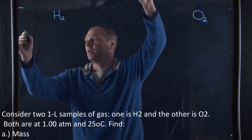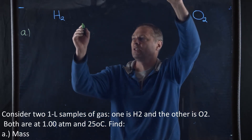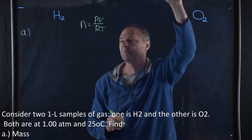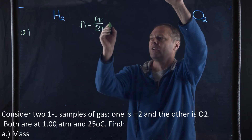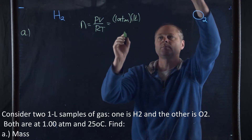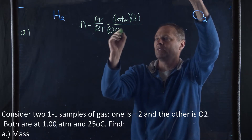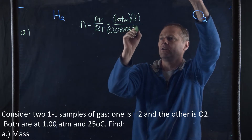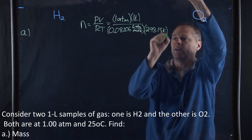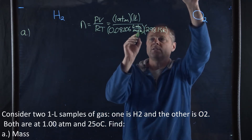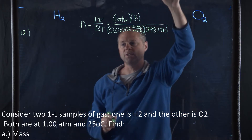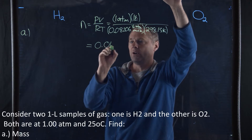To start out with, we're going to look at the mass. In order to find the mass, we're going to use the equation n = PV / RT. Our pressure is one atmosphere, our volume is one liter, R is 0.08206 liter·atmosphere/mol·Kelvin, and the temperature is 298.15 Kelvin. The units cancel, giving us units of moles, and this equals 0.041 moles.